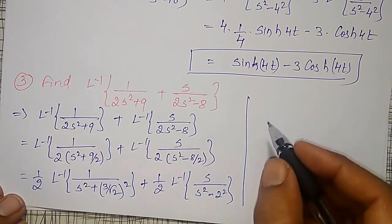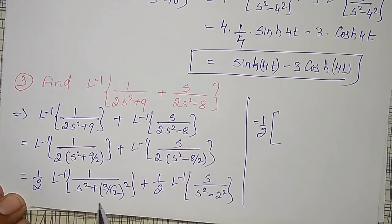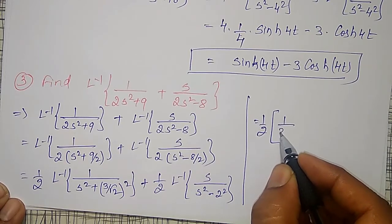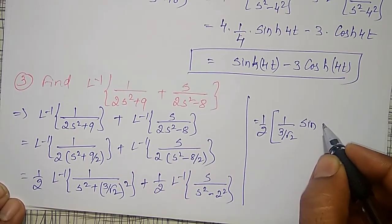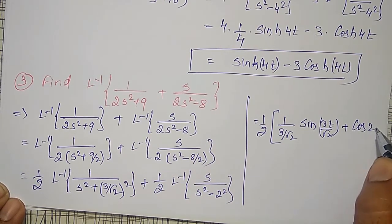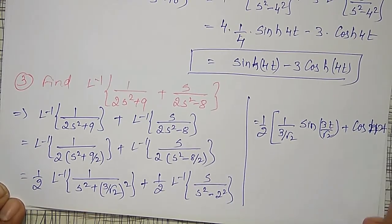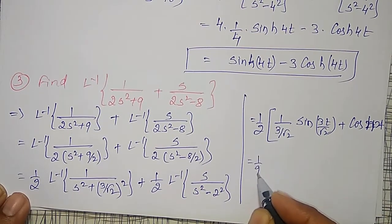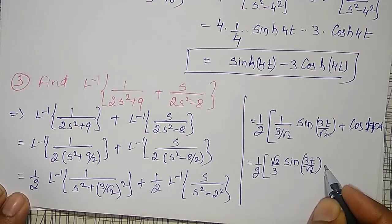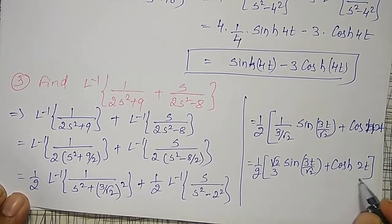Therefore, the inverse Laplace transform gives: 1/2 times [1/(3/√2) · sin(3t/√2) + cosh(2t)]. Simplifying: (1/2) times [√2/3 · sin(3t/√2) + cosh(2t)], which is the required answer.